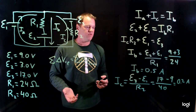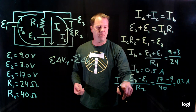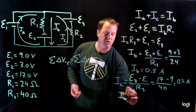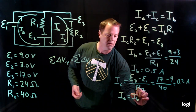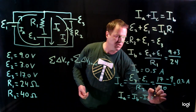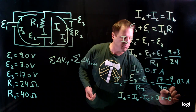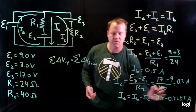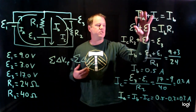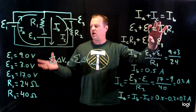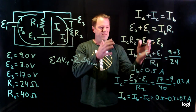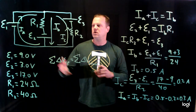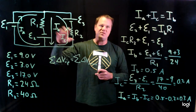Now that we know current B and current C, we can solve for current A. From Kirchhoff's current law: current A = current B − current C = 0.5 − 0.2 = 0.3 amps. So I've set up three equations and three unknowns using Kirchhoff's current and voltage laws, done the algebra to solve for each current, and successfully solved this circuit — predicting the current through each circuit element.